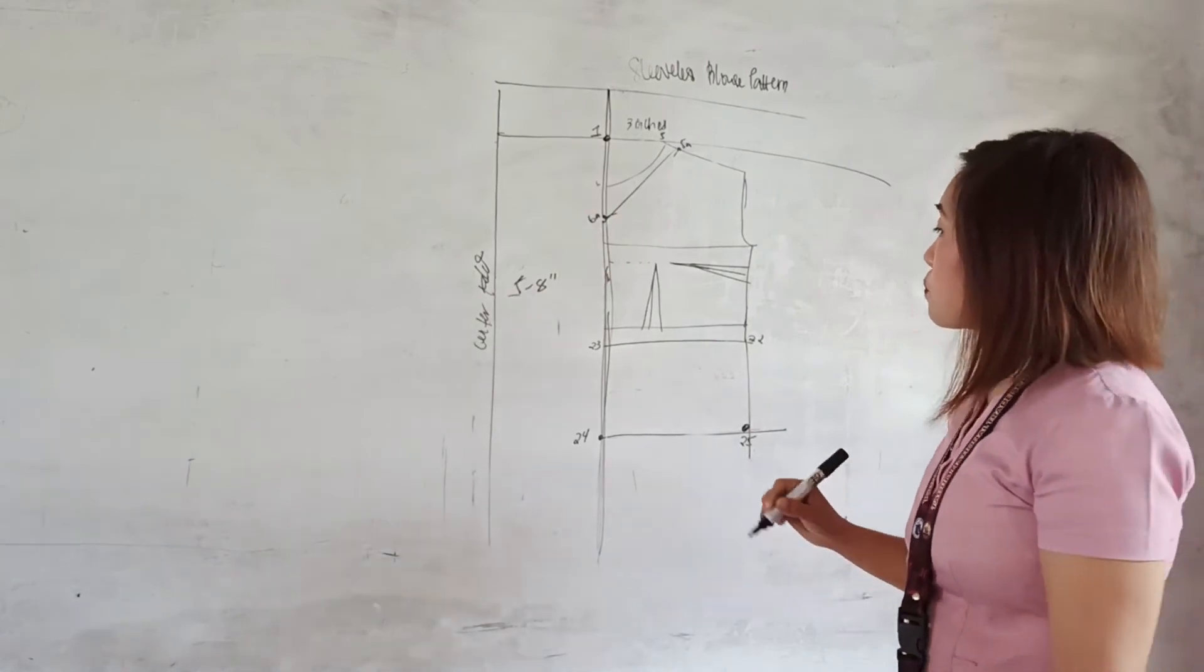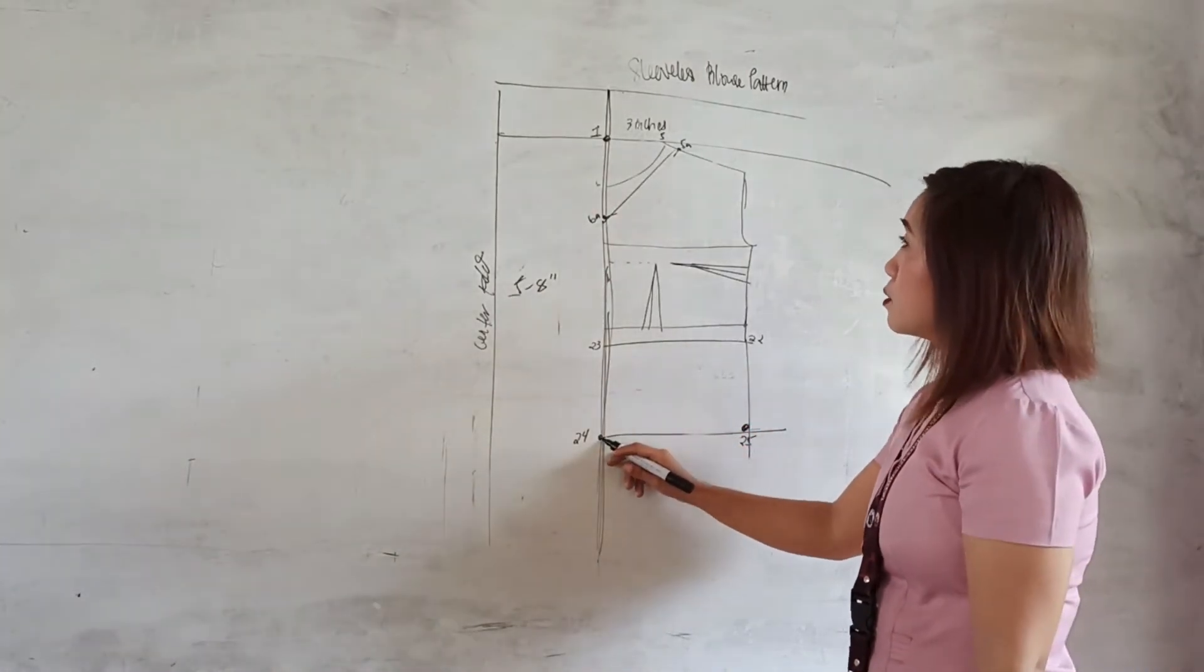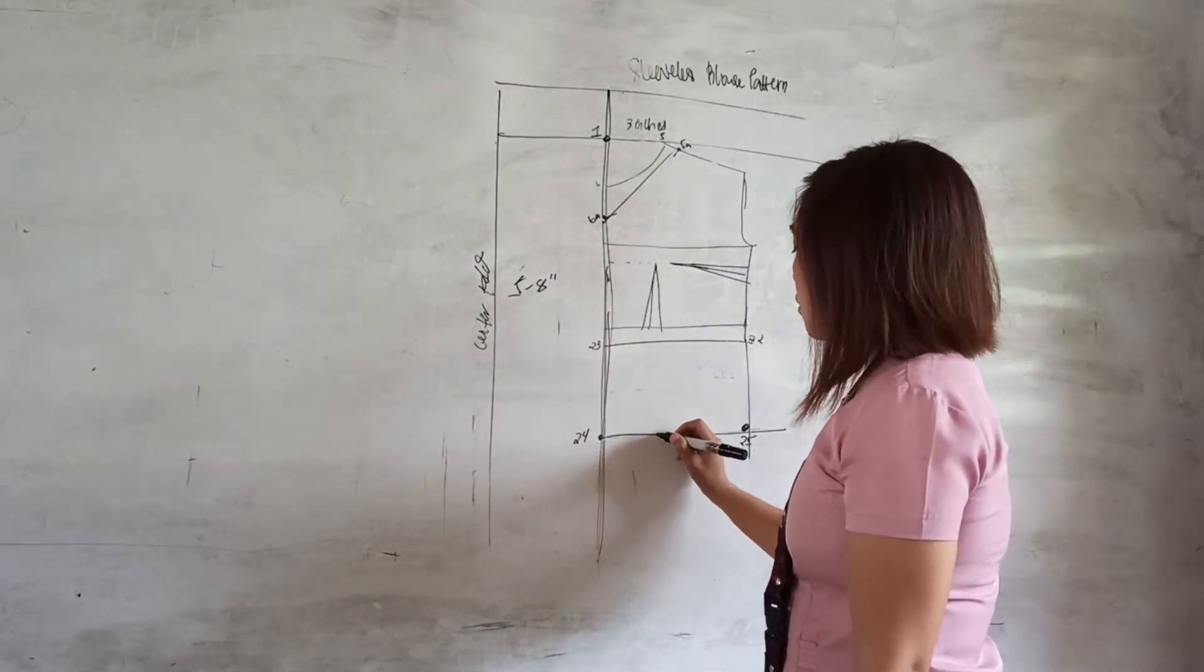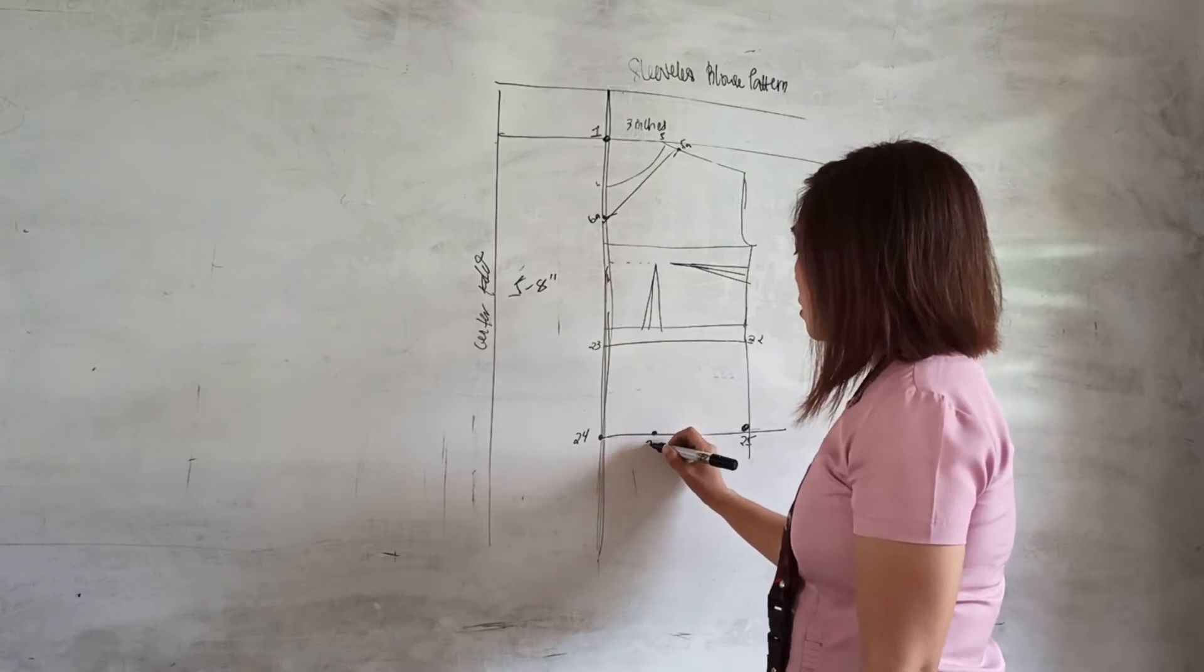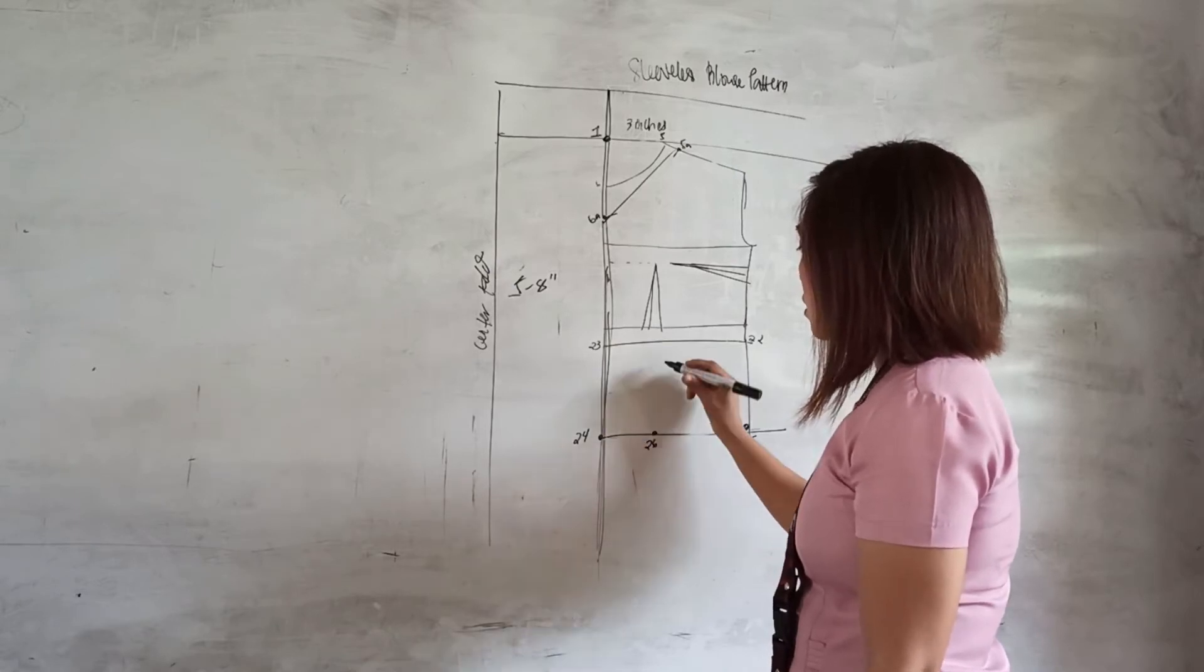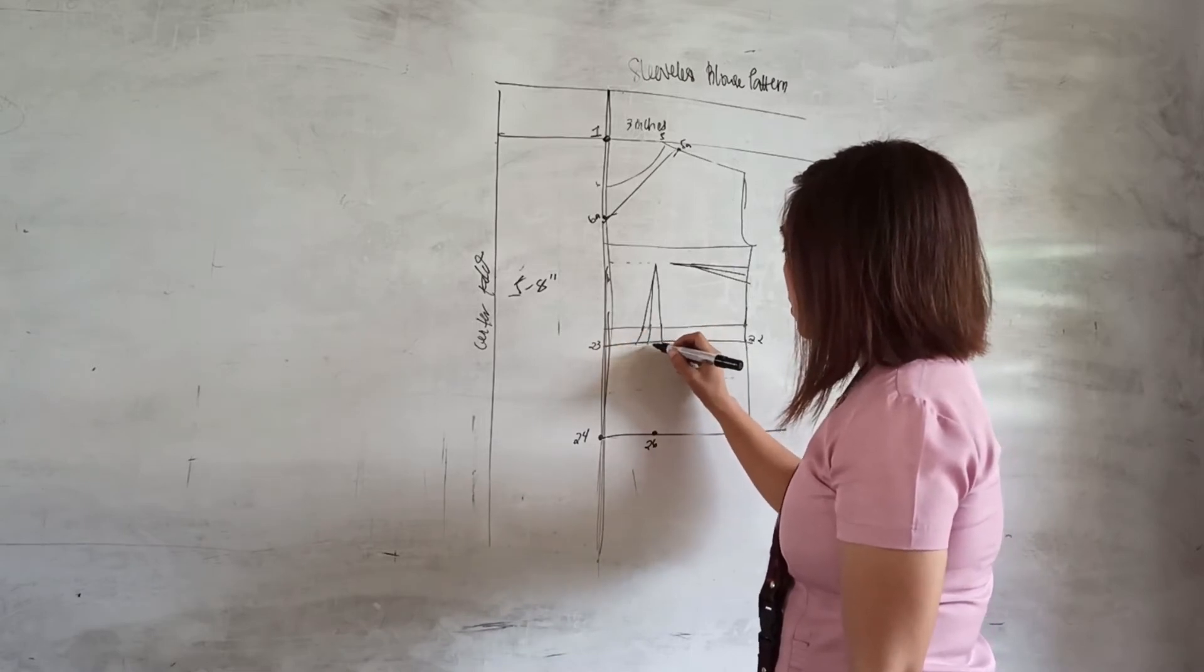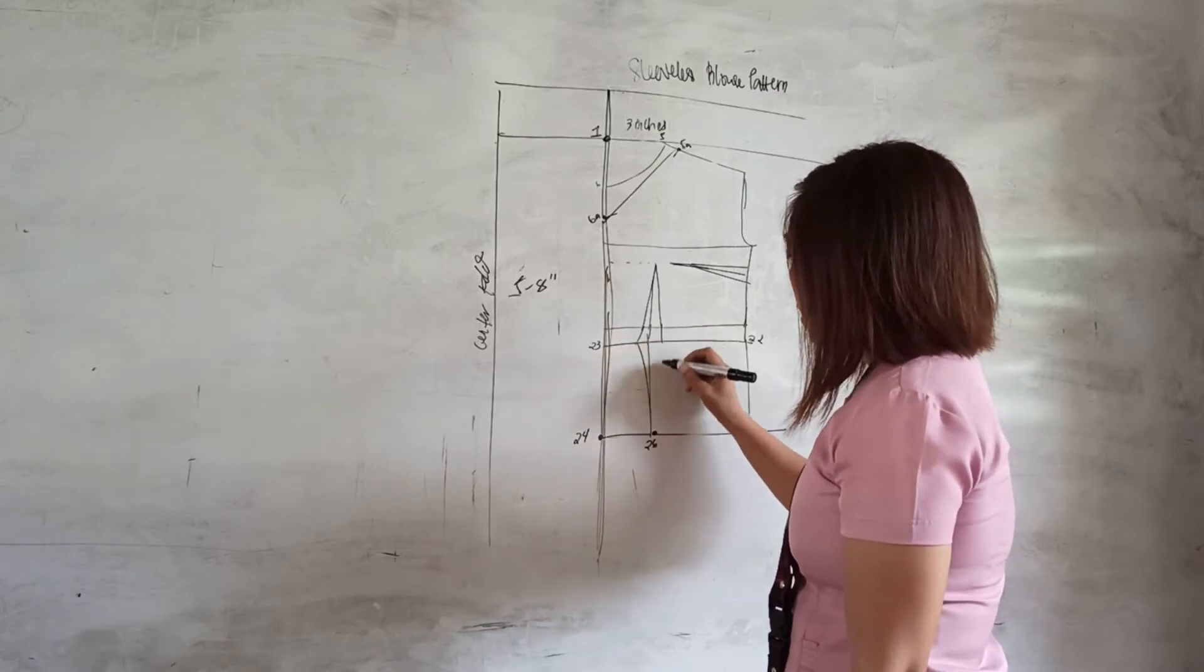From point 5a going to the right, you measure one-half of your bust distance and mark point 26. Then connect it to points 16a, 17a, and 18a, completing our darts.